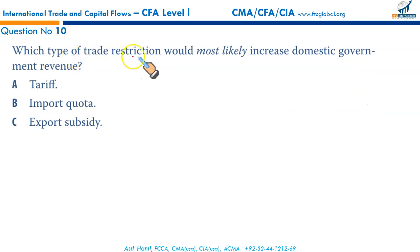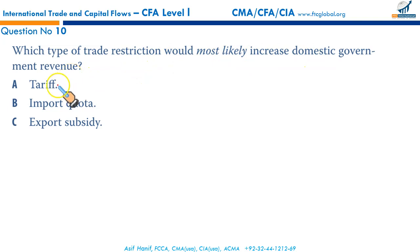Which of the trade restrictions would most likely increase domestic government revenue? Clearly, a tariff — a custom or import tax — will increase domestic government revenues. A tariff is a tax on imported goods collected by the government, meaning government revenue increases. That is a straightforward answer.